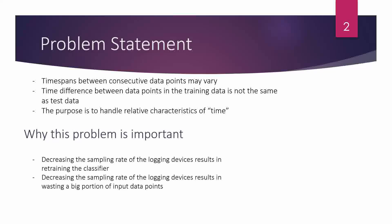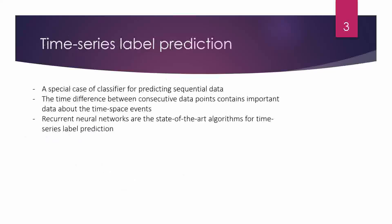In this situation, what happens to the accuracy and F-score of the classifier? The purpose of our paper is to handle the relative characteristics of time. This is important because changing the sampling rate forces us to retrain the whole classifier from the beginning, or forces us to discard a big portion of the data points.